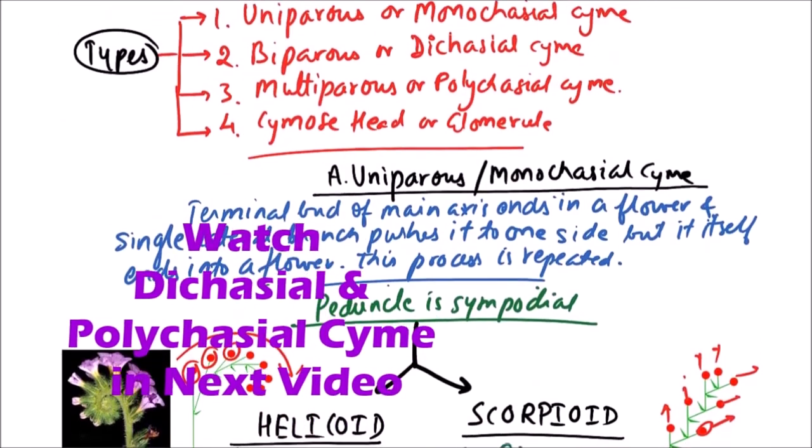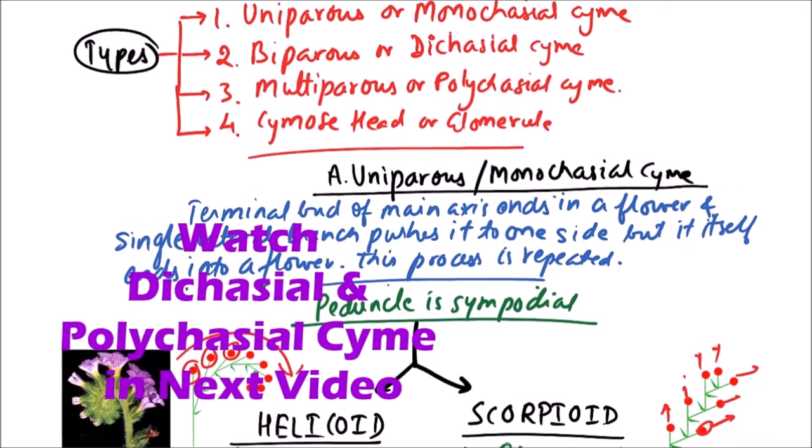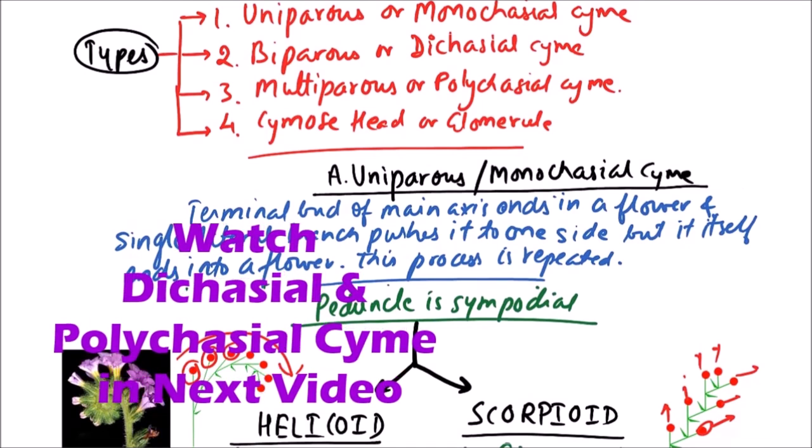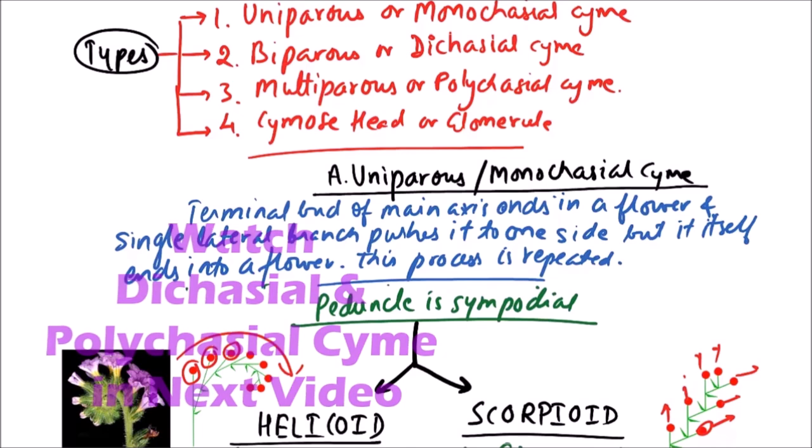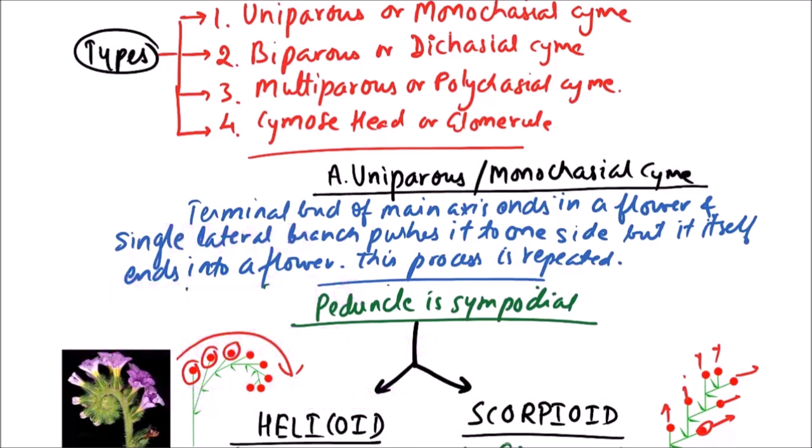In the next video, we'll discuss the other types of cymose inflorescence, that is biparous, multiparous and cymose head. Thanks for watching this video.